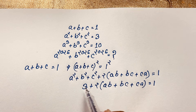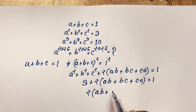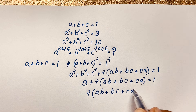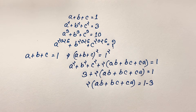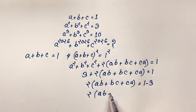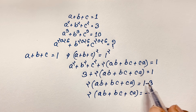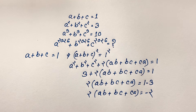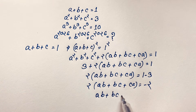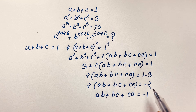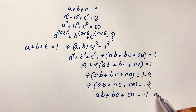Now I move this across: 2 times (ab plus bc plus ca) is equal to 1 minus 3, which is negative 2. Then, if I divide both sides by 2, we find that ab plus bc plus ca is equal to negative 1.